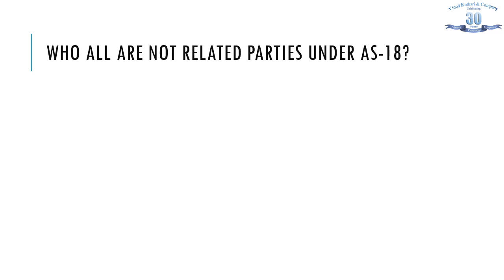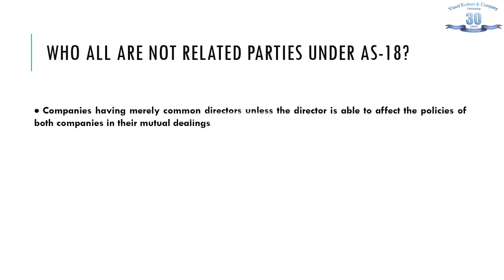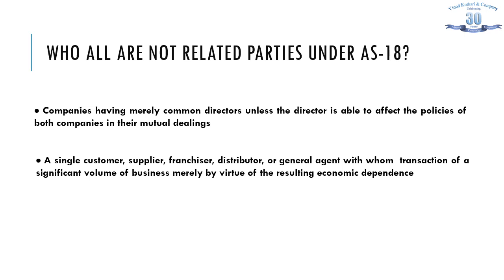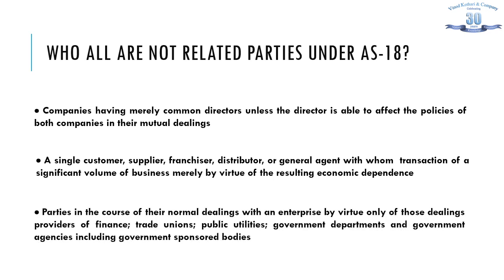Who are not Related Parties under AS 18? Merely having common directors will not make a company a Related Party of the reporting entity unless the director is able to affect the policies of both companies in their mutual dealings. A single customer, supplier, franchisor, distributor or general agent with whom a significant volume of business takes place merely by virtue of the resulting economic dependence. And parties in the course of their normal dealings with an enterprise, including providers of finance, trade unions, public utilities, government departments and government agencies, including government-sponsored bodies.